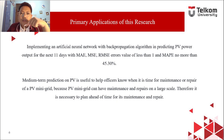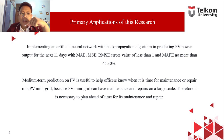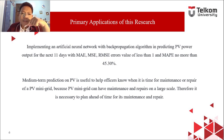For this study, we want to implement an artificial neural network with backpropagation algorithm and predict PV power output for the next 11 days, with error values showing our models are better than the previous studies, with MAE, MSE, and RMSE showing less than one, and MAPE no more than 45%. This study is generally useful to help officers know when it is time for maintenance or repair of a PV mini-grid and help prepare them at an earlier date.